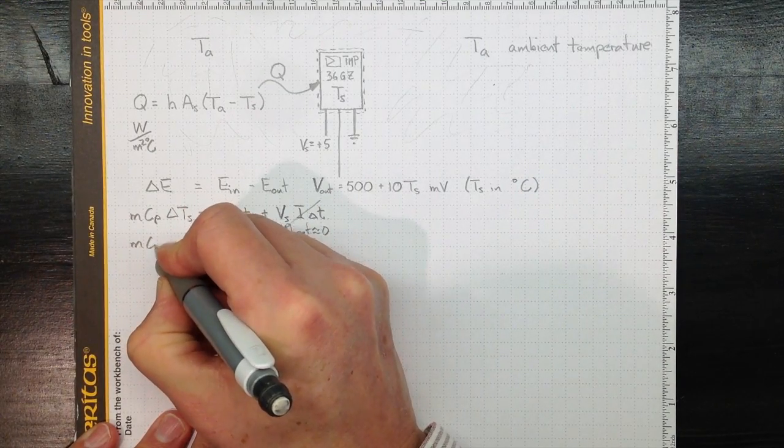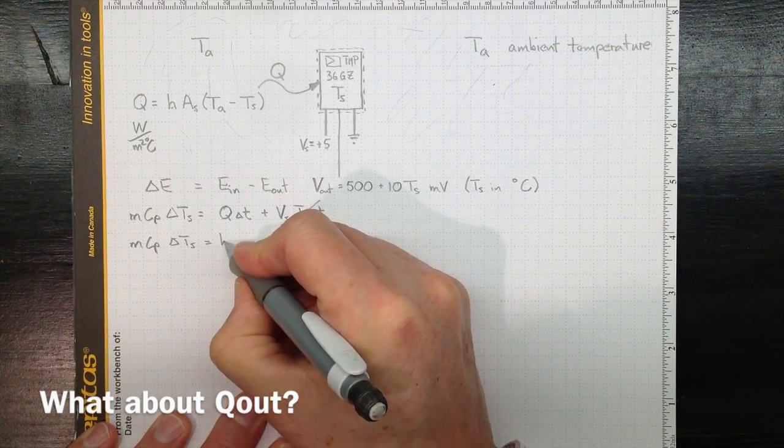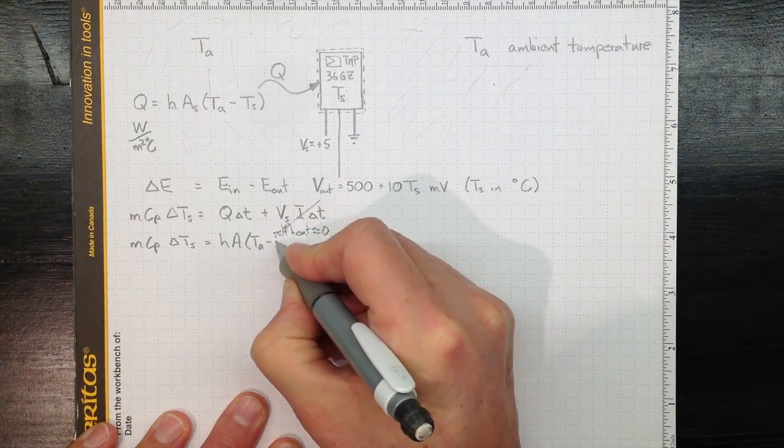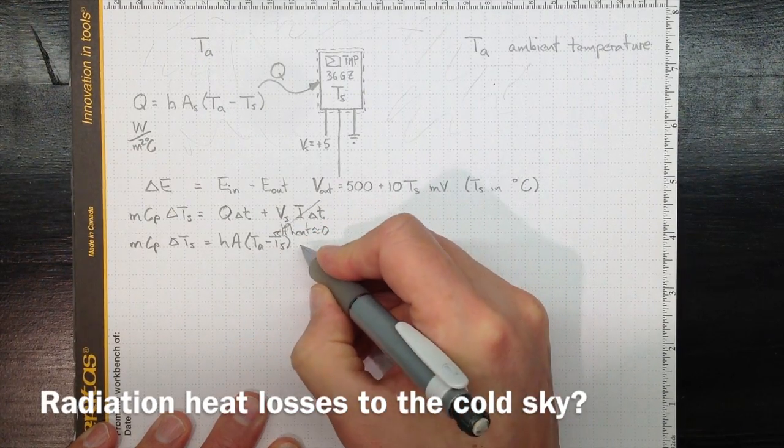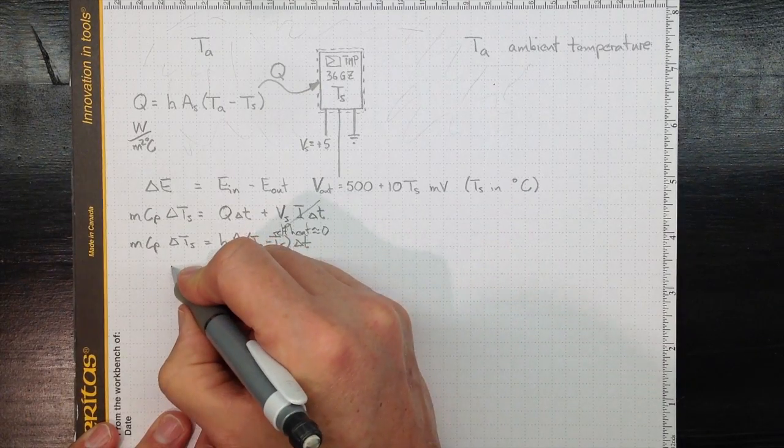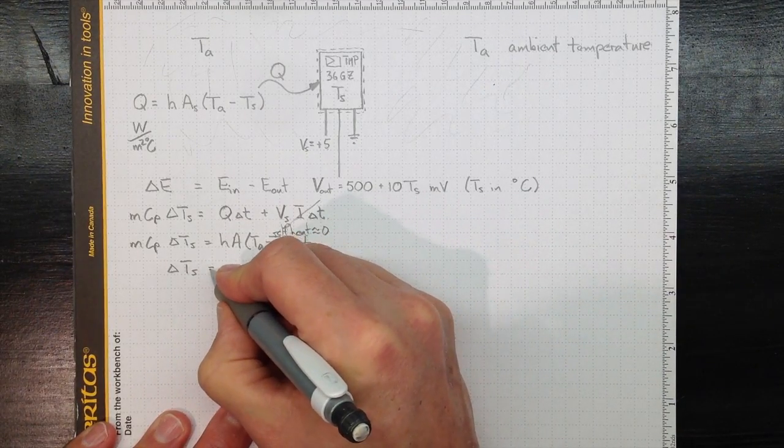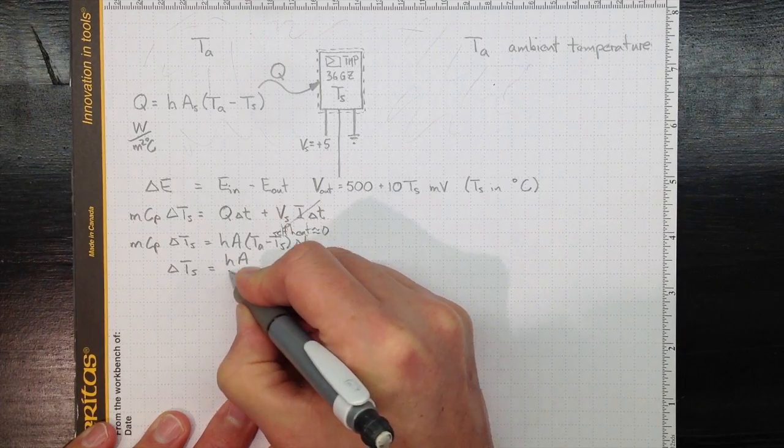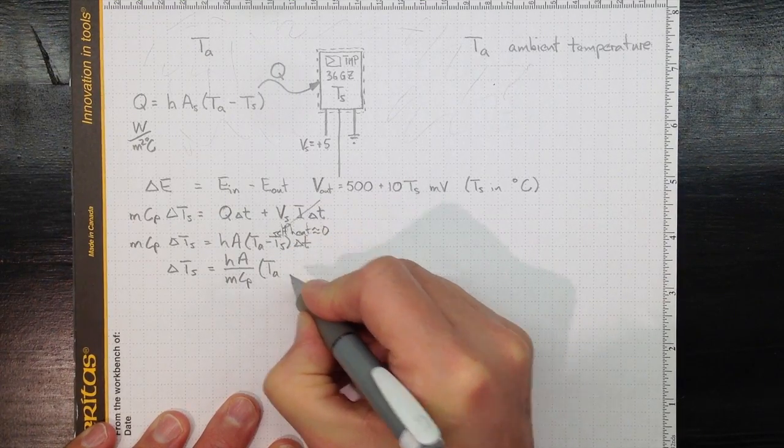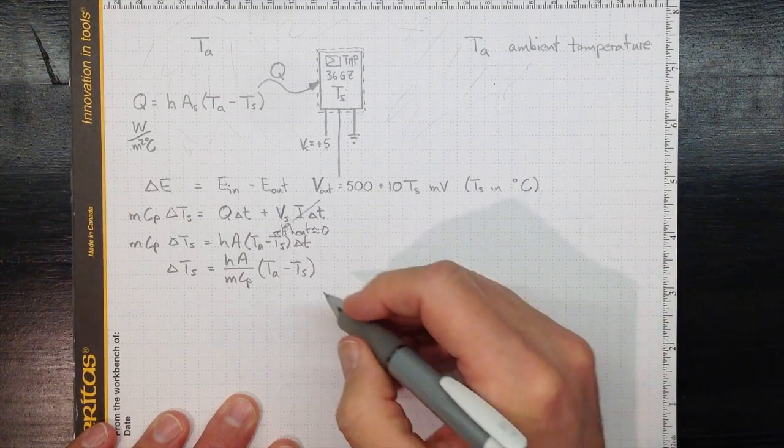So we'll wind up with MCP delta TS equal to Q, which is H times A times TA minus TS, all times delta T. Or rearranging that, we can expect the temperature of the sensor to change by an amount equal to HA over MCP times the difference in temperature between the ambient temperature and the sensor. So the bigger the difference, the faster the temperature will change, times delta T.